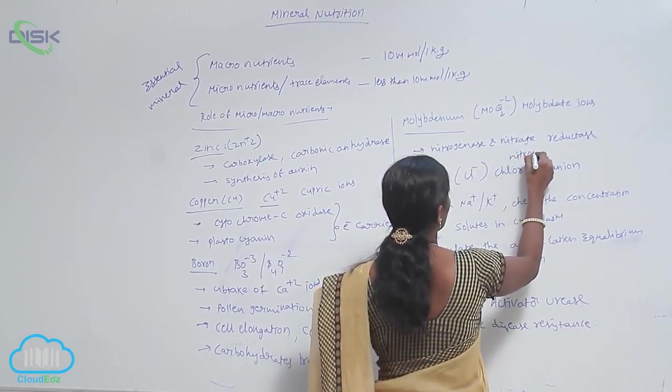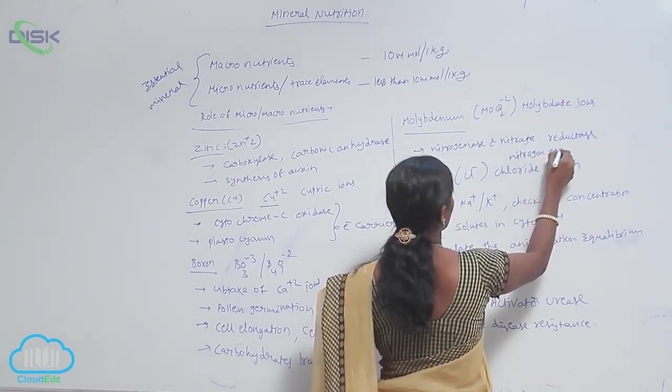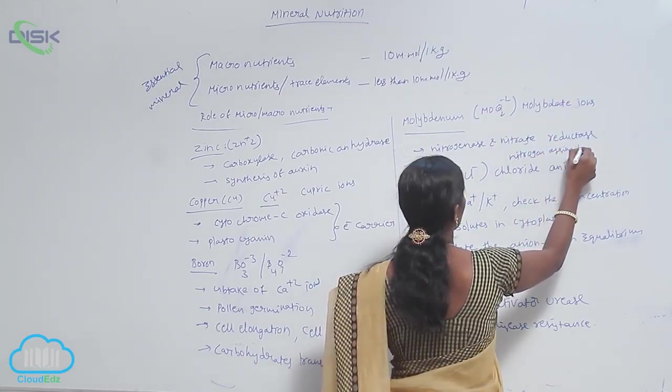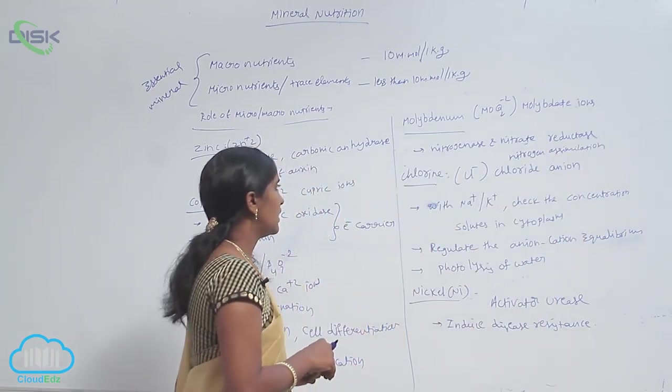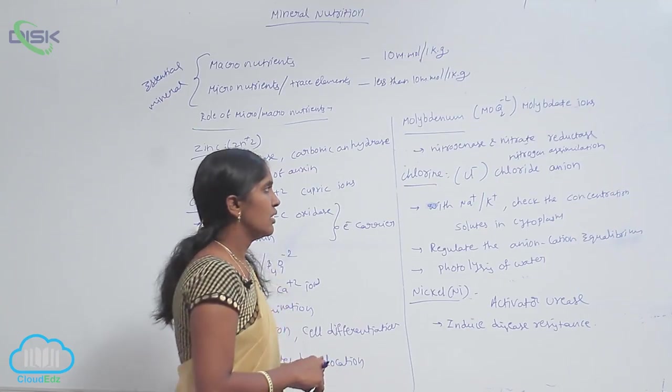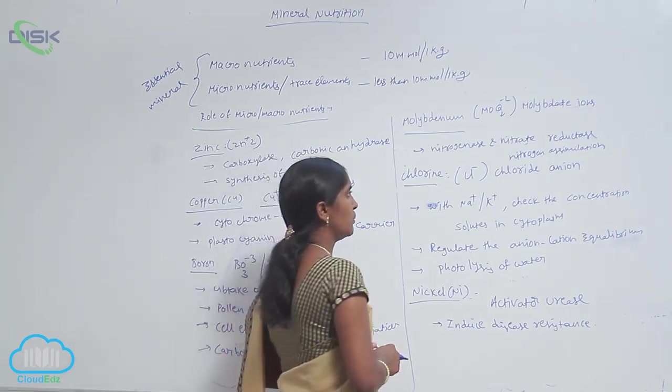Nitrogenase and nitrate reductase are both involved in nitrogen assimilation. And the next element is chlorine. The absorbed form of chlorine by the plant is chloride anion.